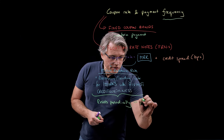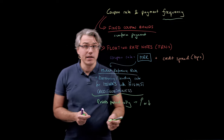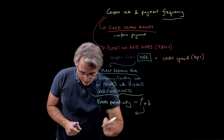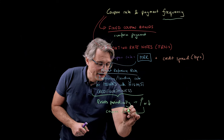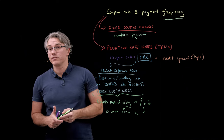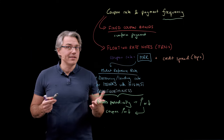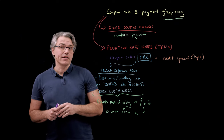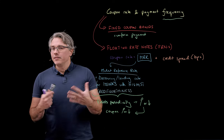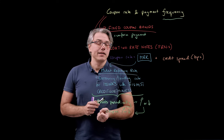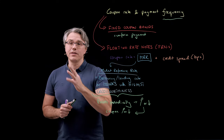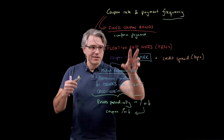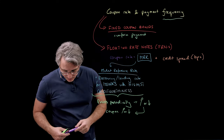This obviously means the market reference rate can go up or down, causing the coupon to accordingly go up or down in line with what's happening to the MRR. In a question we'll do shortly, I've used the example of EURIBOR as a Eurozone-specific market reference rate. When you take the exam, the examiner may just call it the MRR — it's just a figure you need to plug into the question.